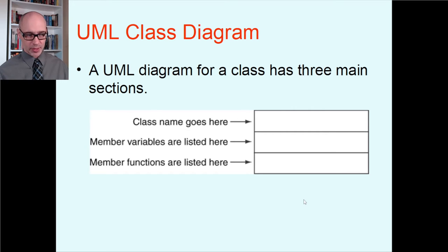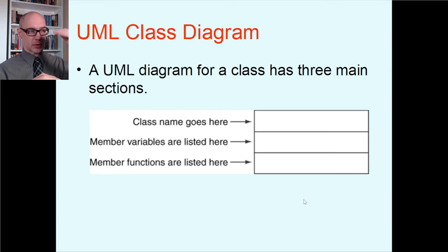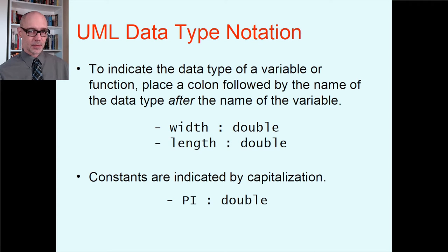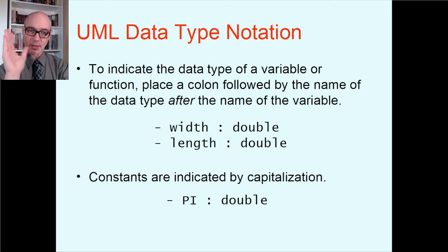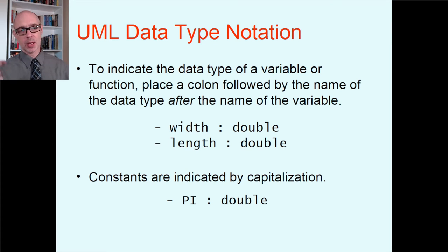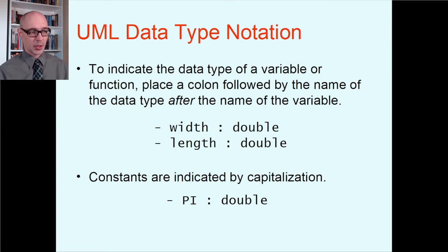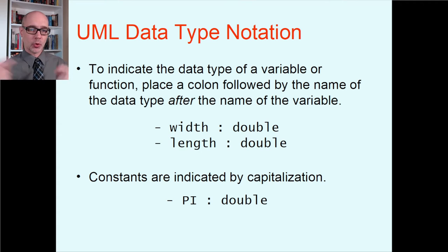Name, data, functions — that's what's in a class. The first section is just one line for the name; the last two sections can get longer depending on how much is in the class. For UML data type notation: when listing member variables, you indicate the data type last. You write the name of your variable or function, then a colon, then the type. Notice that's reversed from C++ — in C++ you put the type first and then the name. UML reverses that: name first, type second.